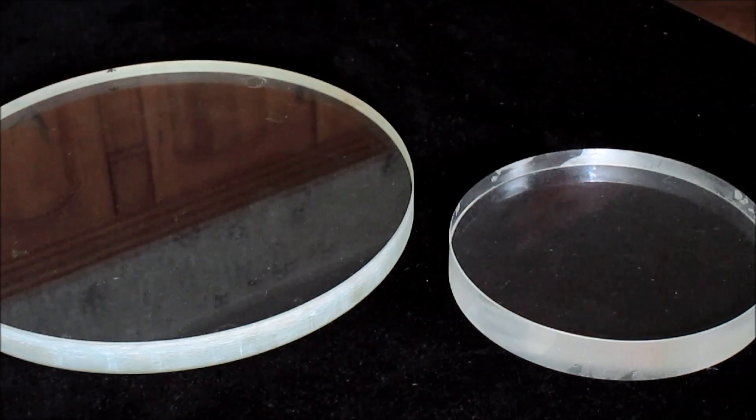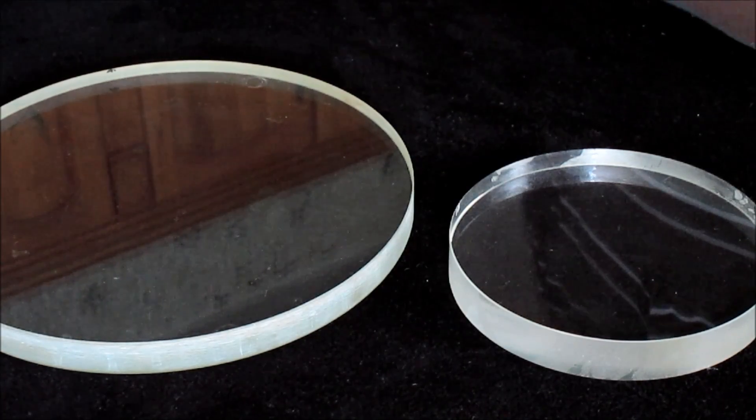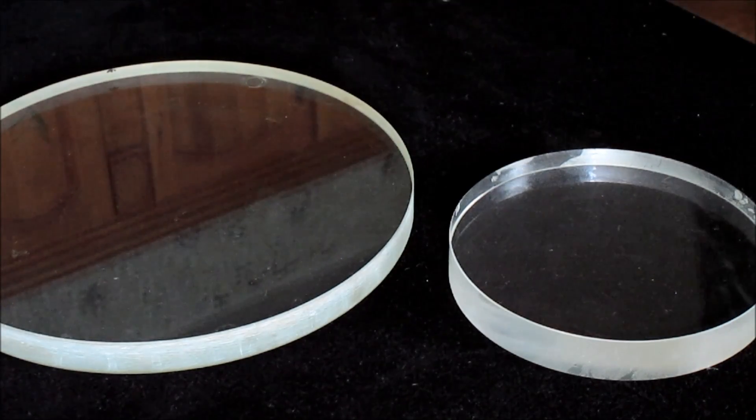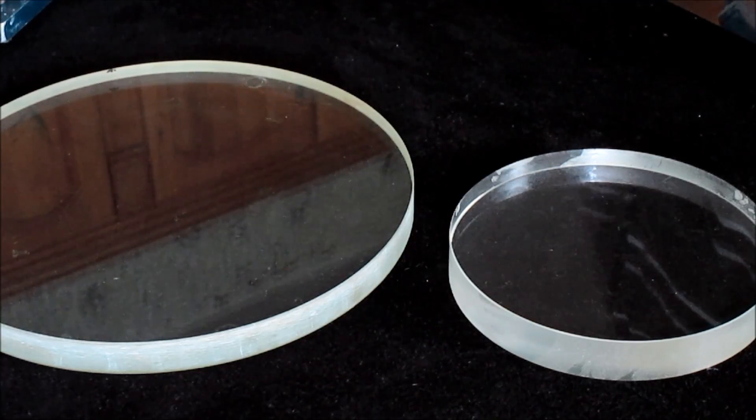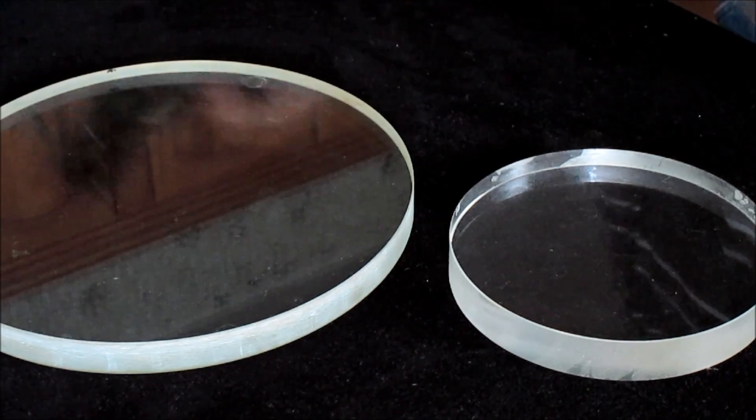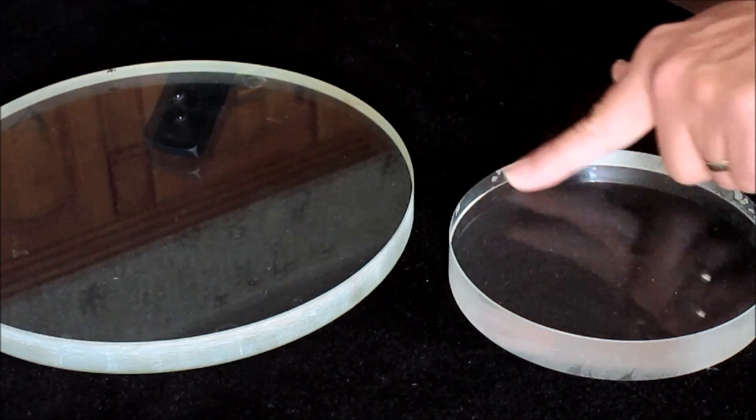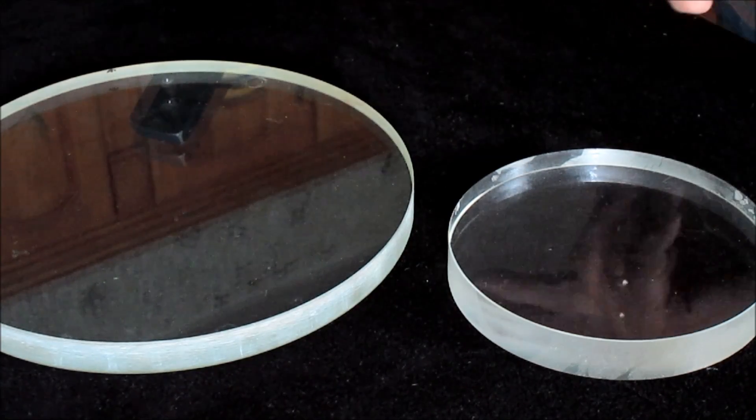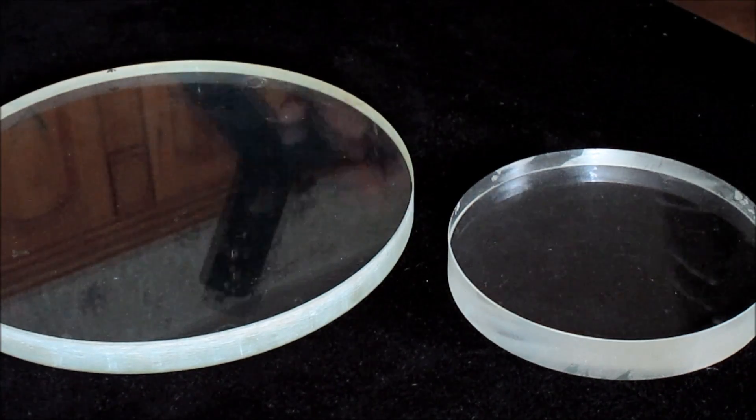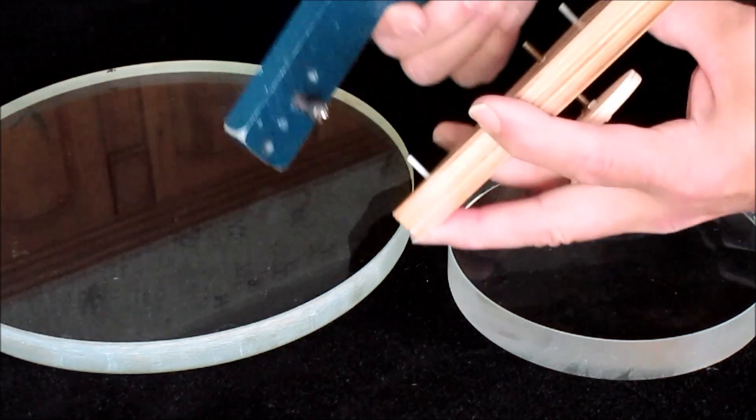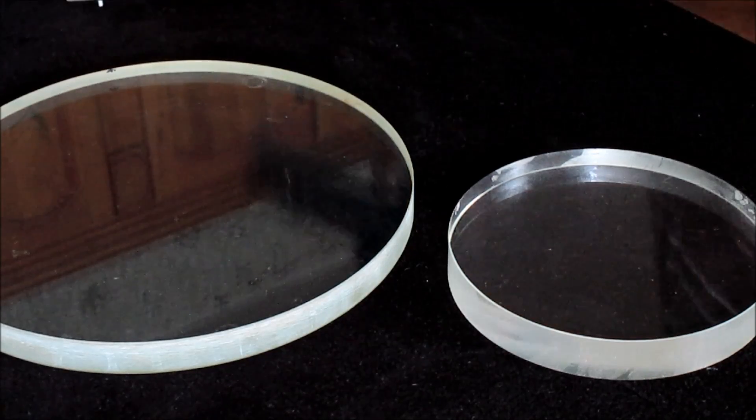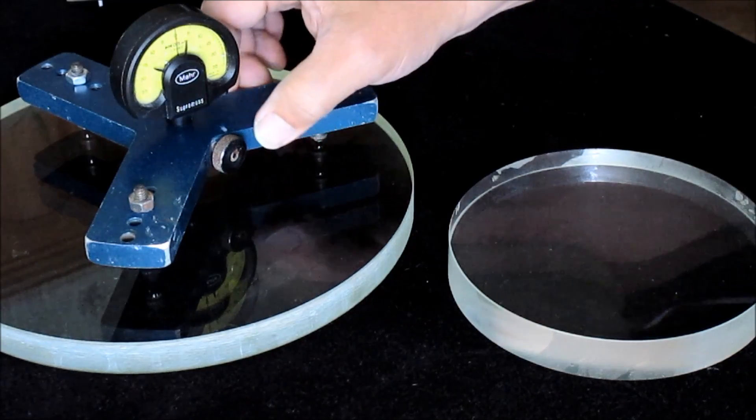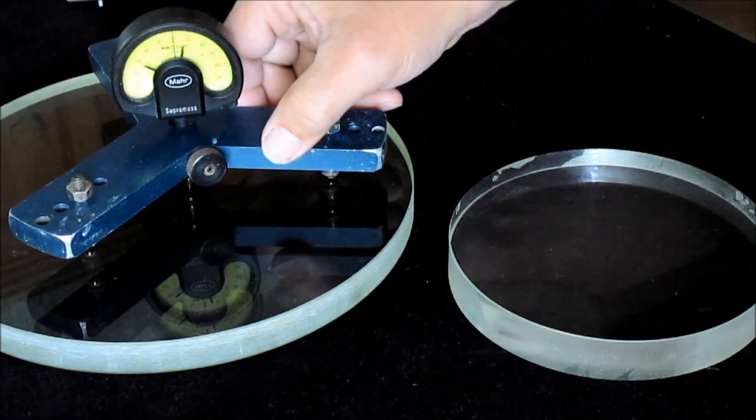Now, some of you out there are probably thinking, 'Ed, you're crazy—how can a piece of wood with some nails and a screw even come close to an expensive indicator?' Let me prove it to you right now. I have two pieces of Pyrex—one's an optical flat and one's almost flat. It only has a half micron difference as measured with this gauge, and I have the feet set pretty much close together as my gauge.